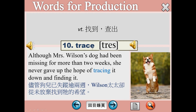Although雖然，連接詞連接兩個子句。Mrs. Wilson's dog也就是畫面上這隻狗狗，它已經失踪超過兩個禮拜了，過去的過去用過去完成式。它還是從未放弃希望，give up the hope，什麼的希望呢，找到它的狗狗，把它找回來。